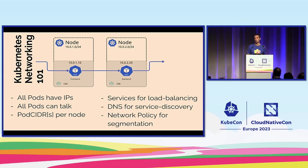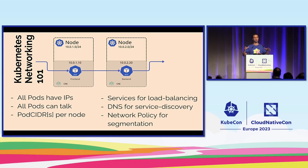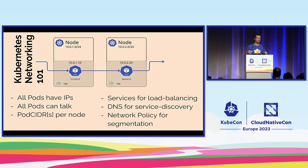As the last principle of Kubernetes networking, there is network policy, which implements segmentation. Network policy allows you to define which pods can talk to which other pods. You could do segmentation at the namespace level — allowing communication within a namespace but not across namespaces — or even at the pod level, essentially saying only certain pods can talk to certain other pods. This is called Kubernetes network policy and, as we will see in the demo later on, plays a huge role in troubleshooting.